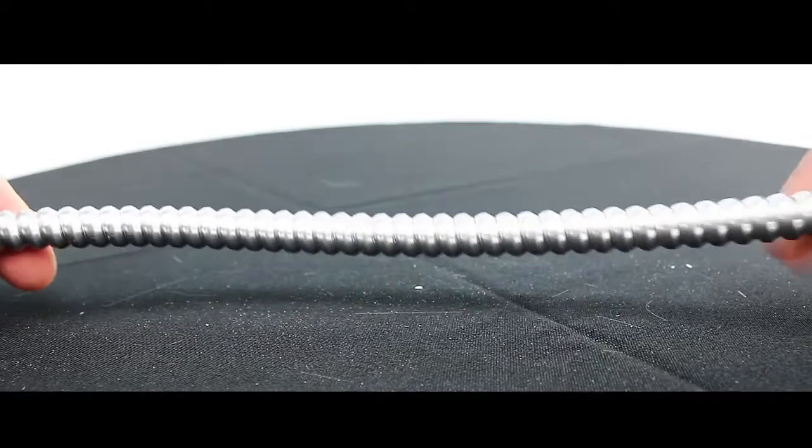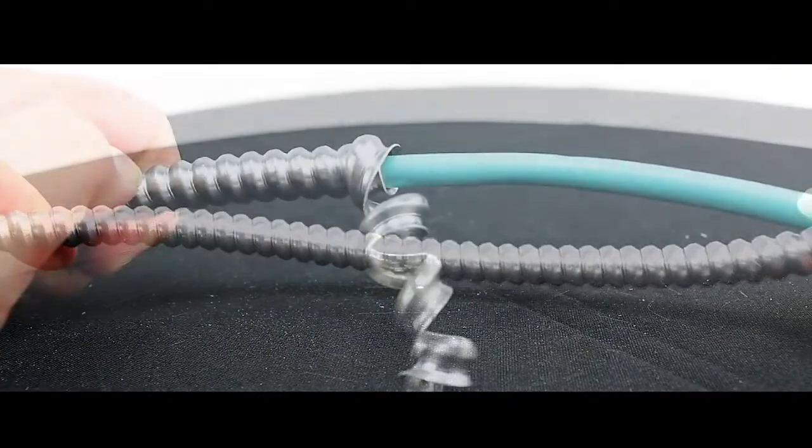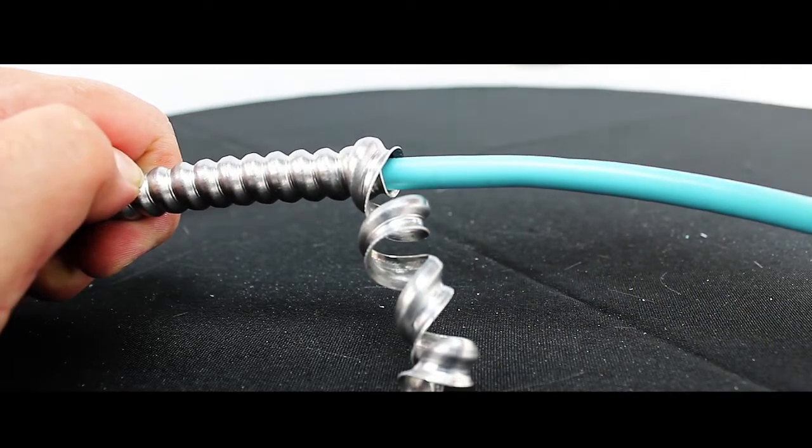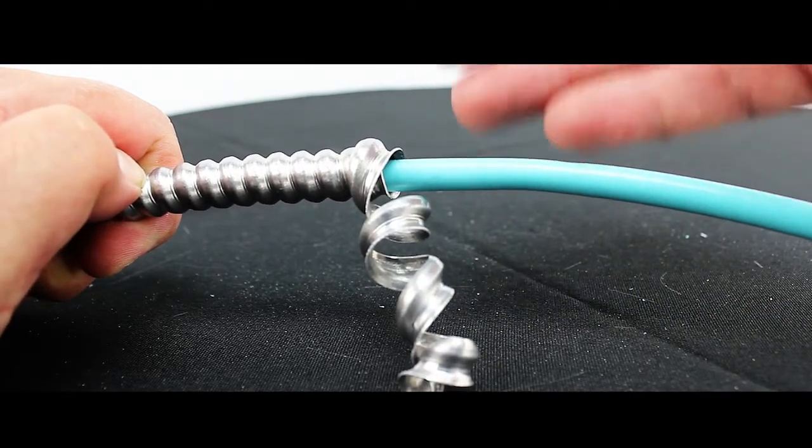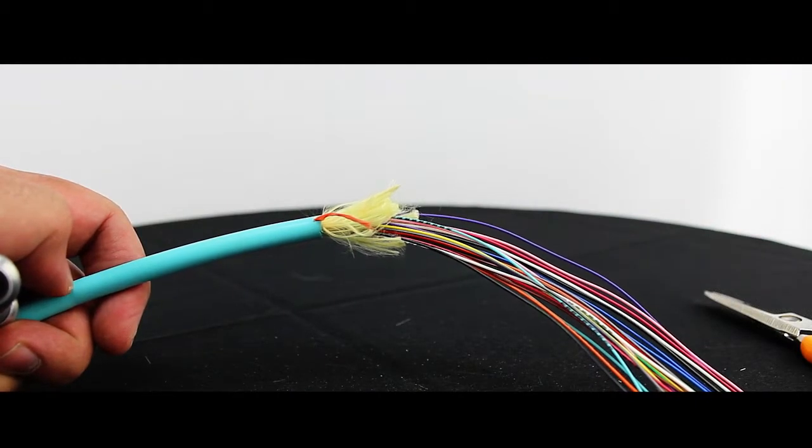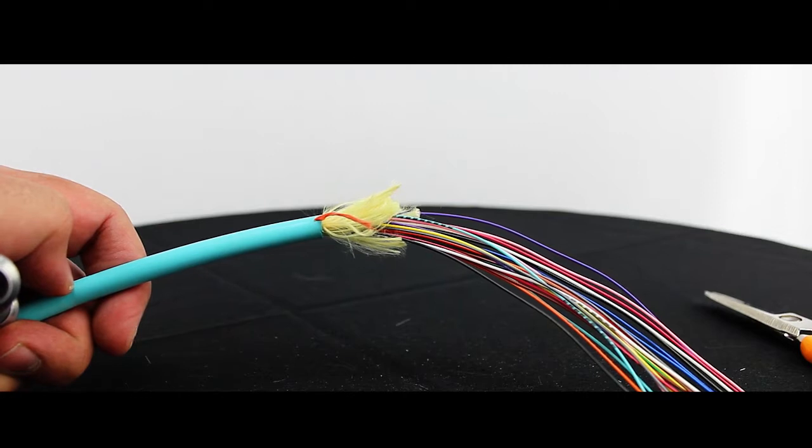Now let's try to cut some of this off. So underneath your armor you have a tight buffered indoor cable. Underneath the indoor tight buffered cable you have your pull string, your yarn.